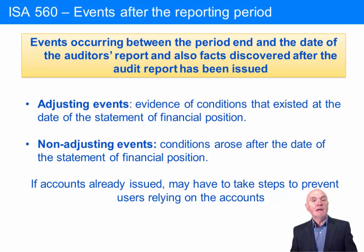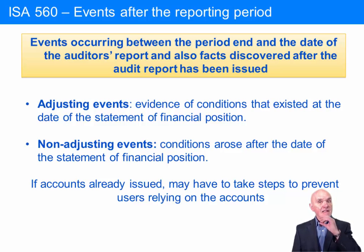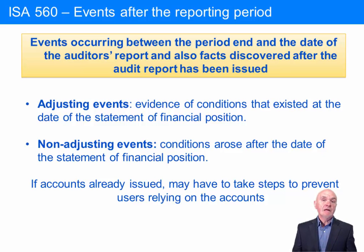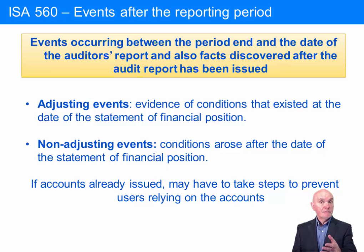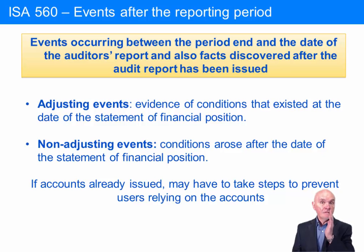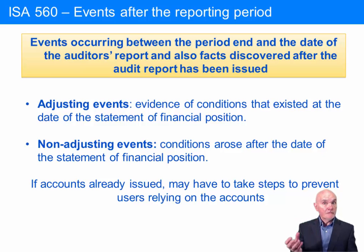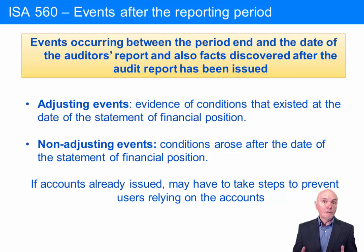Another example: what happens in the first few months of the new year where trading has disastrously gone down? If trading has disastrously declined, there is evidence pointing towards going concern issues. If trading goes down in January, February, maybe March, and the audit report hasn't been signed by then, it's really telling us that at the 31st of December the going concern outlook for this company is actually very poor. There should be a note put into the financial statements and probably an emphasis of matter paragraph put into the audit report.